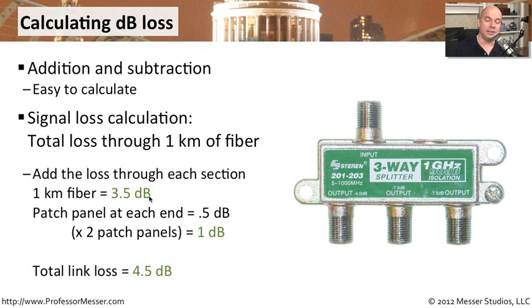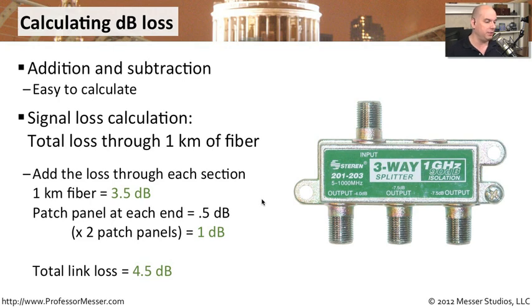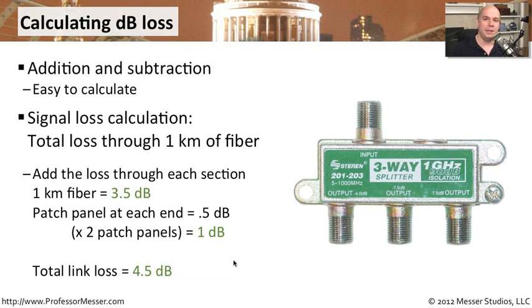We also have patch panels at both ends — connections that terminate the fiber and patch it through to our routers or switches. Each time you go through a patch, you also lose signal. We've determined that each patch panel costs 0.5 dB, and with patches on both ends, that's a total of 1 dB of loss. Adding the 3.5 dB fiber loss and the 1 dB patch loss gives us a total link loss of 4.5 dB — simple addition and subtraction to calculate signal loss through our network connections.